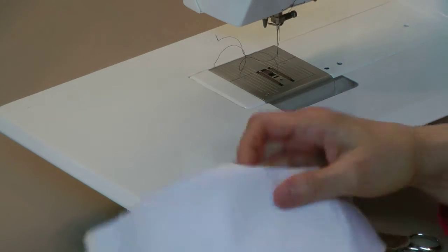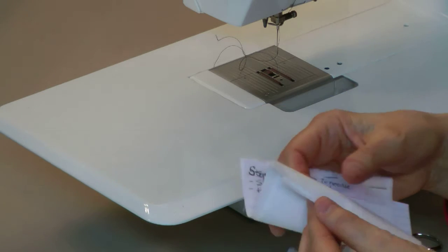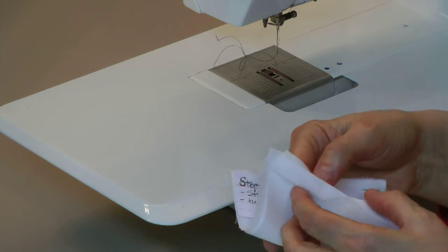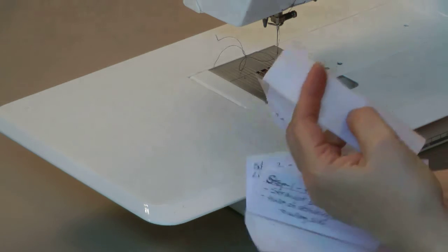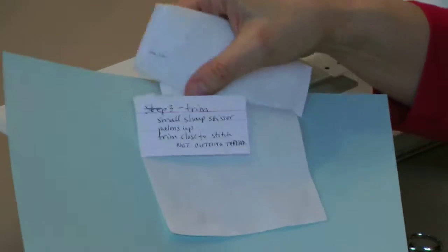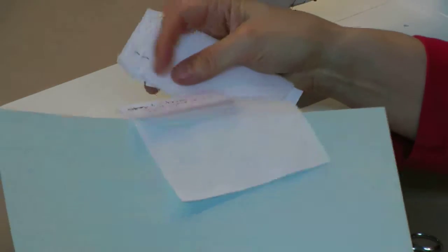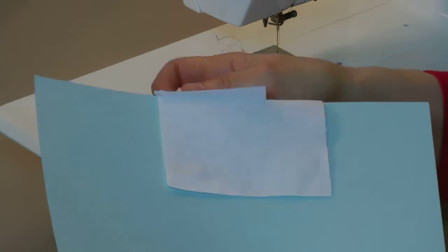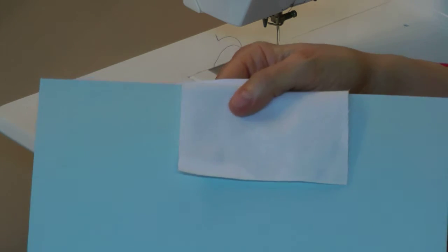So I'm going to show you what we're going to do to start with. First of all, we're going to do a tiny, tiny zigzag edge. So I'm going to show you what that looks like right here on this little sample.